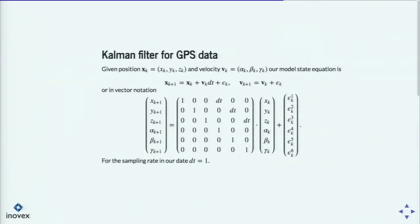In our concrete Kalman filter case, the state equation is: the next position is the current position plus velocity times DT. The next velocity is the current velocity plus some error term — so I'm not accelerating or decelerating too fast. Written in vector notation, this just gives us matrix F. In our case, the sampling rate of this watch is one second, so DT is one second. The measurement equation is also really easy: we are measuring only the GPS position. With GPS we only have the position, and only implicitly know something about velocity. So our state — which includes position and velocity — gets mapped to only a measurement of the position plus some error.